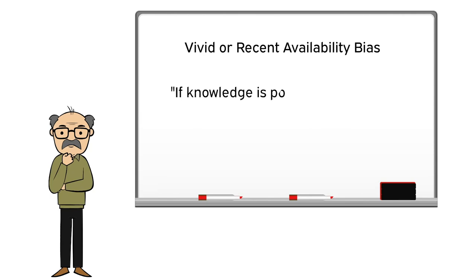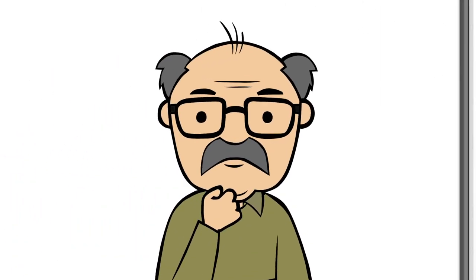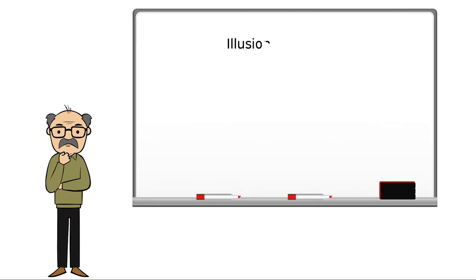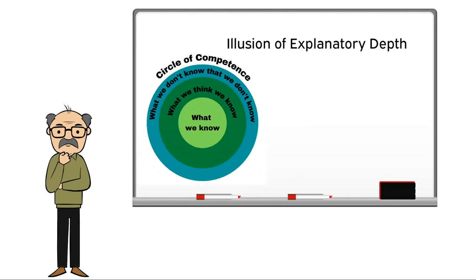If knowledge is power, knowing what we don't know is wisdom. These biases tie into a concept from social psychology called the illusion of explanatory depth, where people have the illusion that they know something well or are competent, but when they go to actually explain the topic, they are unable to do a very good job explaining it. Their depth of understanding was merely an illusion.